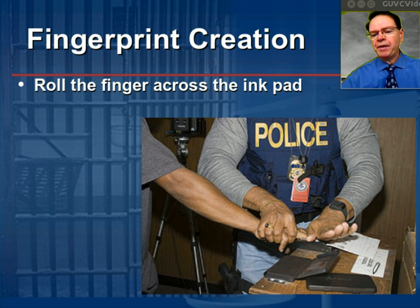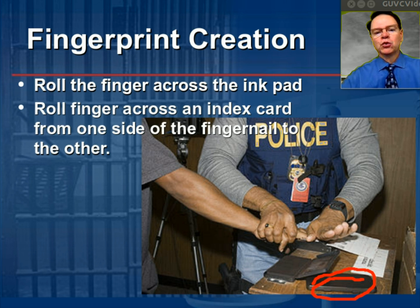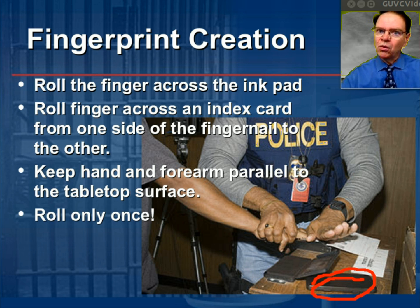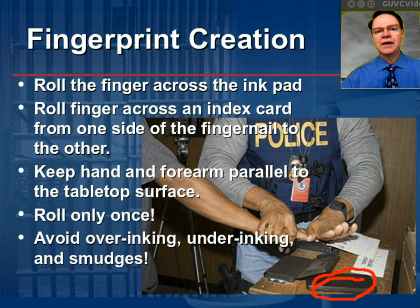How are fingerprints taken? Using an ink pad, you roll the finger from the outside of a person's hand to the inside across the ink pad, then roll that finger across a piece of cardstock from one side of the fingernail all the way to the other, keeping the hand and forearm as parallel as possible to the tabletop surface. Roll only once to avoid creating more than one image. Avoid over-inking or under-inking, as these will produce dark indistinguishable regions or gaps in the pattern. Also avoid turning the wrist or hand, as that causes smudging. It takes practice — you won't get it right the first time.